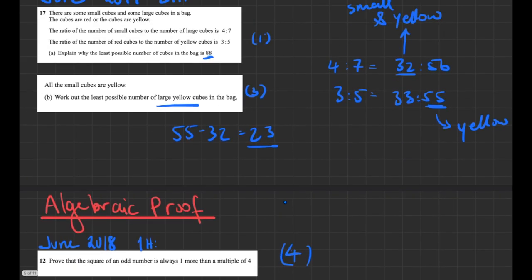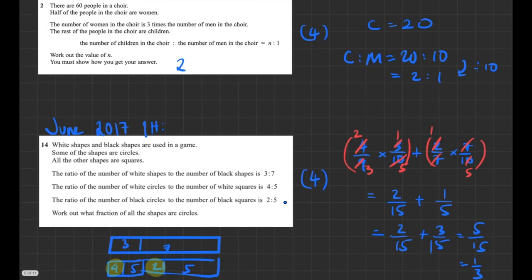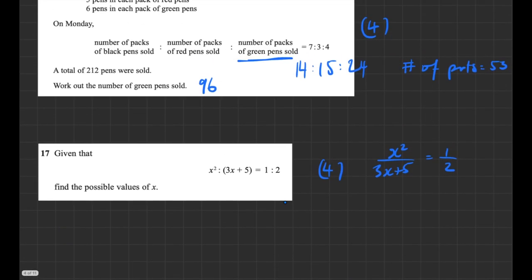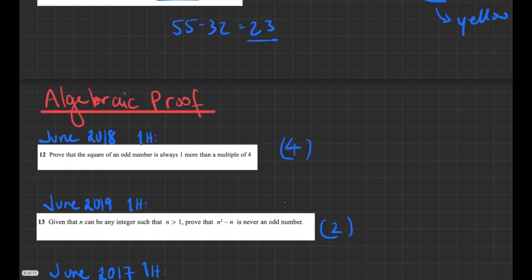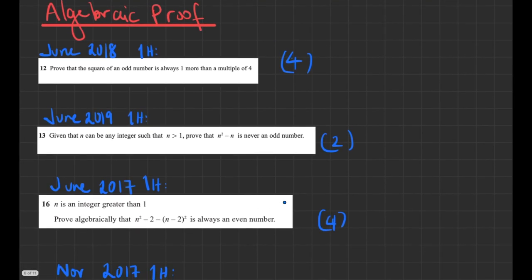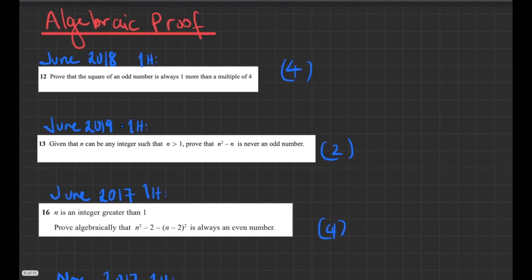That was all the ratio questions from the non-calculator papers. Moving on to algebraic proof — a great topic to revise. As you can see, this came up in the 2017, 2018, and 2019 non-calculator papers, giving a pretty good chance it will appear again. There are some useful things to keep in mind with these types of questions, which I'll run through as we go.